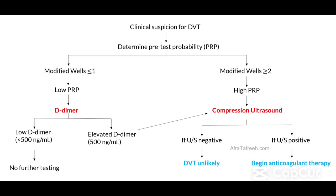Bringing these principles together in terms of the pretest probability, as well as how we utilize the D-dimer in the workup of patients with DVT: we start first by having a clinical suspicion for the patient having a DVT, and we then determine the pretest probability using the Wells score. If they have a modified Wells score that is less than or equal to 1, then that patient has a low pretest probability, in which case we order a D-dimer.